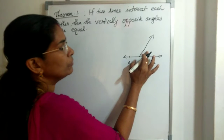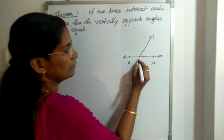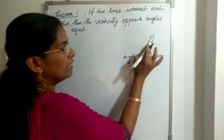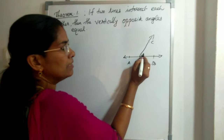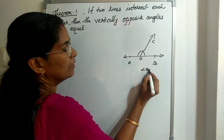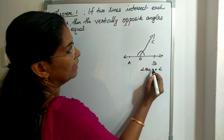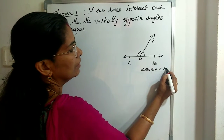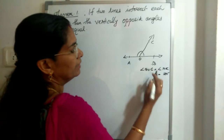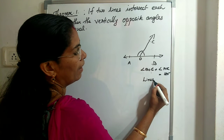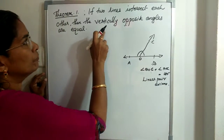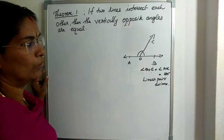Before that, you need to know about this axiom: if one ray stands on a line, then the sum of the two adjacent angles is 180 degrees. Here, AB is a line and ray OC stands on line AB. Then the sum of the two adjacent angles — angle BOC plus angle AOC — equals 180 degrees. This is the linear pair axiom, and we will use it in the proof for vertically opposite angles being equal.